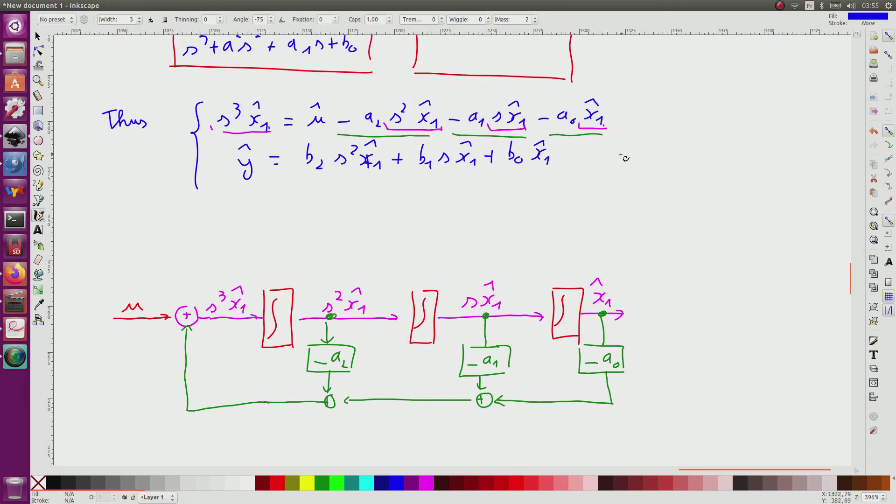Then I will wire the second equation to form y, y-hat. So for this, I will have here b2 s² x1-hat, for this one. I go here to an adder. Here I will have b1 due to this.